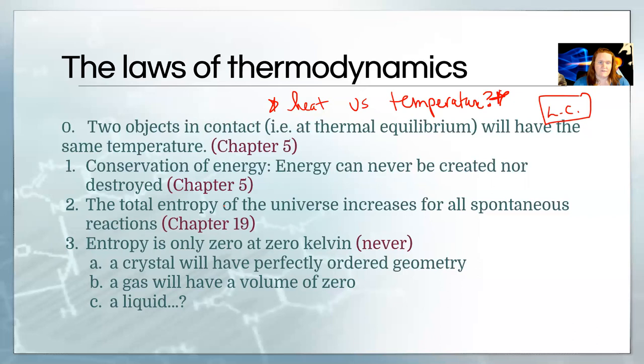The zeroth law of thermodynamics says two objects in contact with each other are going to have the same temperature. The first law of thermodynamics we're very familiar with—we learned about that in Chem 1 several times, but primarily in chapter 5. It just says energy cannot be created or destroyed. However much energy we have in the universe is what we have, end of story. The second law of thermodynamics is largely what we're going to study now in chapter 19, and it just says that the total entropy of the universe has to be getting bigger and bigger and bigger if anything is changing.